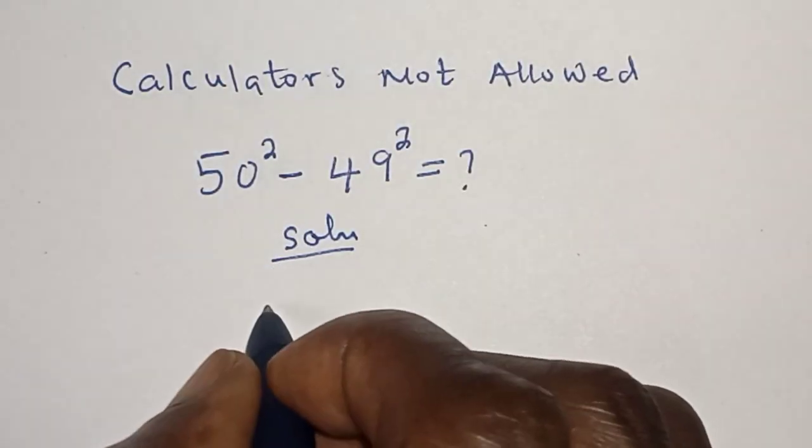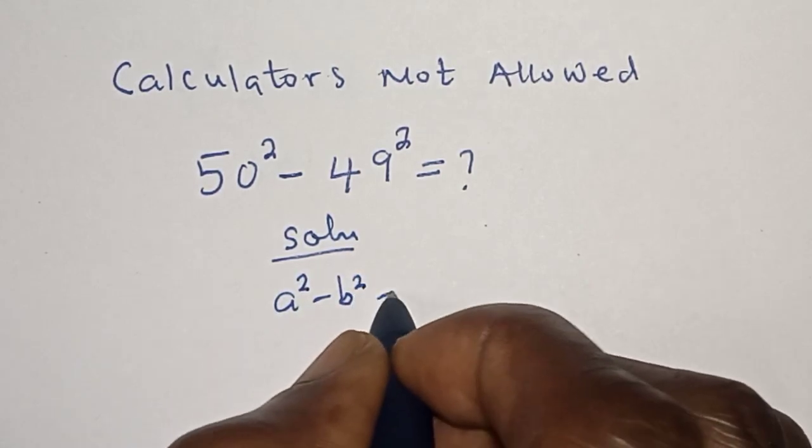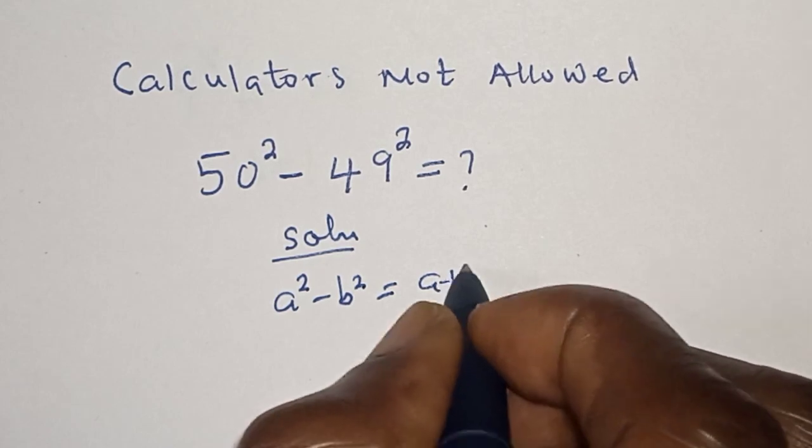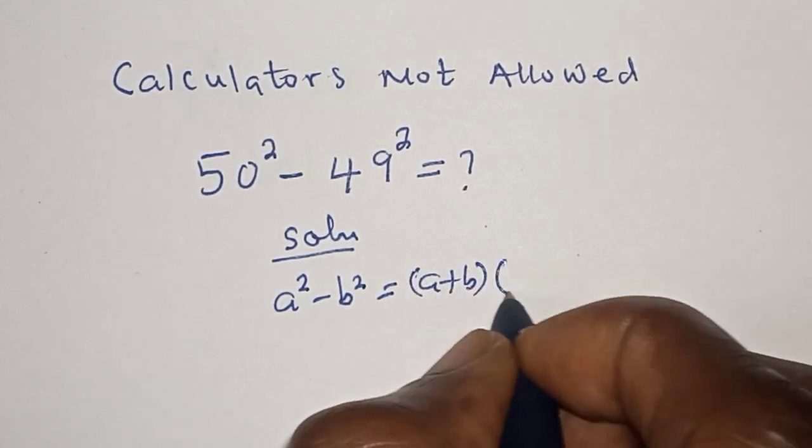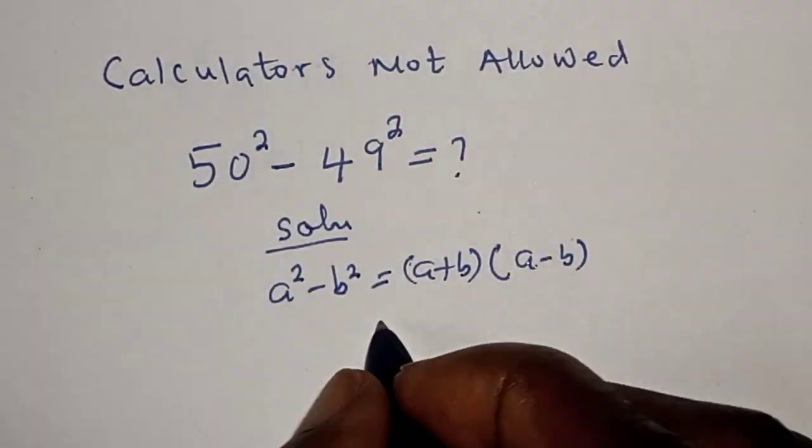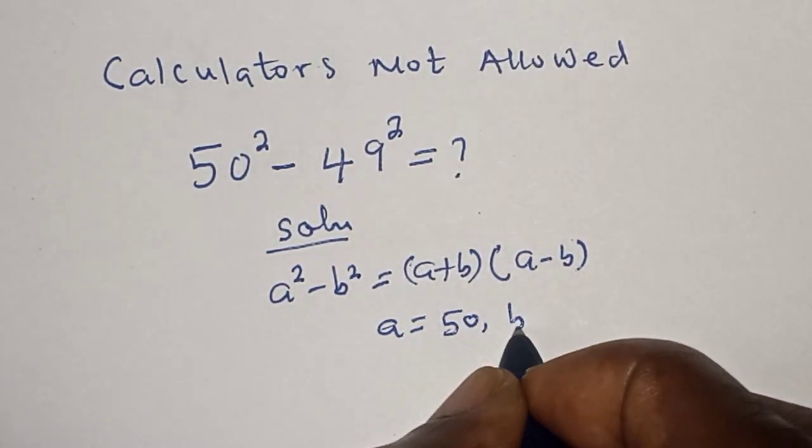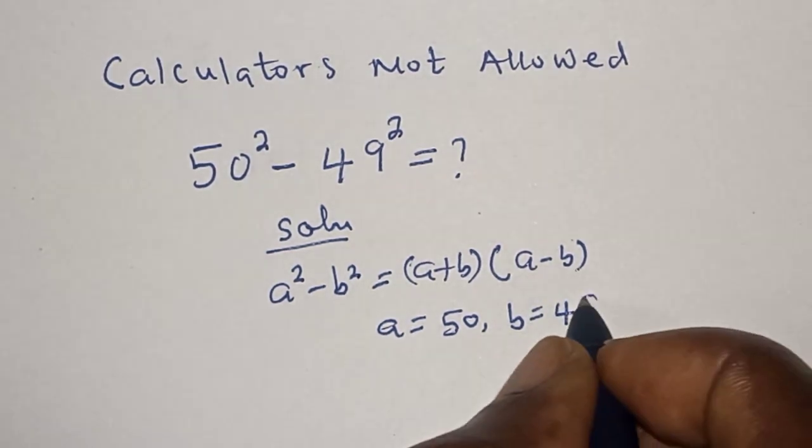Take note of this rule: a squared minus b squared is equal to (a + b)(a - b). Then a equals 50, b equals 49.